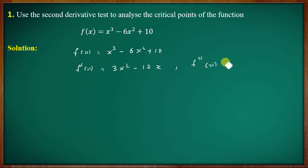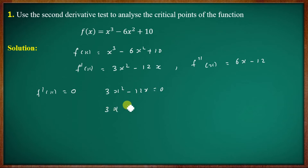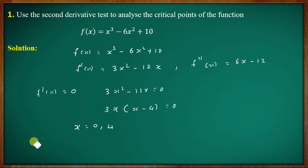The second derivative is f double dash of x equal to 6x minus 12. Setting the first derivative equal to zero to find critical points gives 3x square minus 12x equal to 0. The critical points are x equal to 0 and x equal to 4.